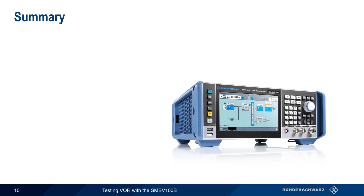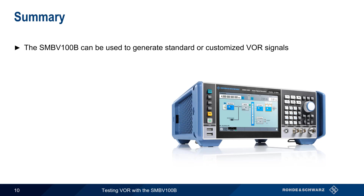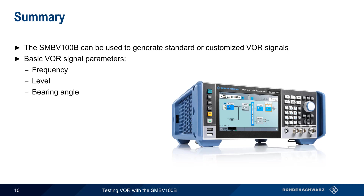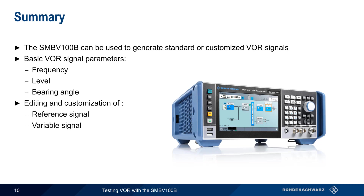So in summary, the SMBV100B can be used to generate standard or customized VOR signals. The three basic parameters in VOR signal generation are the frequency, level, and the bearing angle or radial. In addition, the various components of the VOR signal can be enabled, disabled, or modified — these are the reference signal, the variable signal, and the COMID signal. This concludes our presentation, Testing VOR with the SMBV100B. If you'd like to learn more about avionics, navigational aids, or generating and analyzing avionic signals, please see the links in the video description. Thanks for watching.